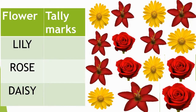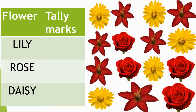Now students, in this example we have a collection of flowers — lily, rose, and daisy. First we will count how many lilies there are: 1, 2, 3, 4, 5, 6. There are 6 lilies. So how many tally marks will I draw? Yes — 1, 2, 3, 4, and 5. I will draw a cross line to make a group of 5, then 6.